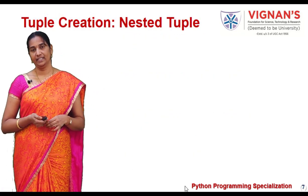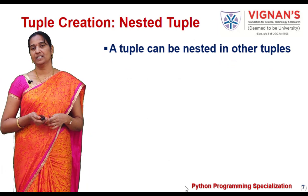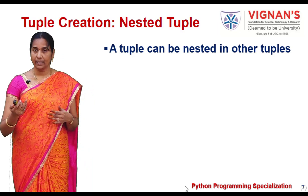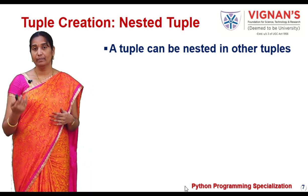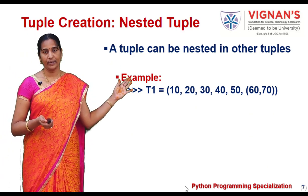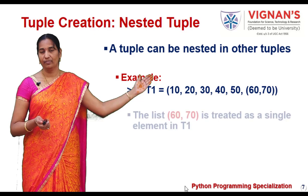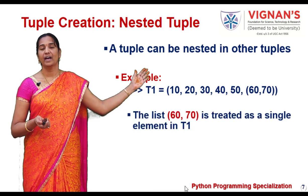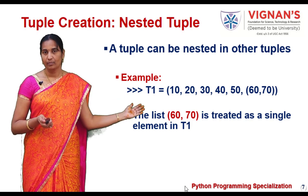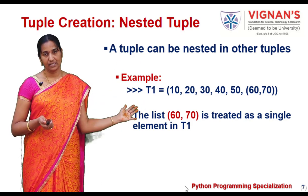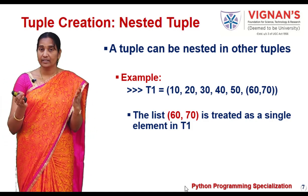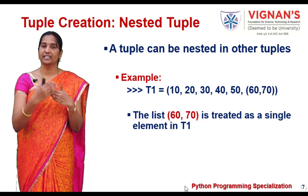Now let us see how to create a nested tuple. Similar to the nested list, it is possible to create a nested tuple — a tuple where one tuple can be included as an element in another tuple. Here you can observe t1 is a nested tuple where it includes an element that is itself a tuple. If you observe, 60 and 70 form the internal tuple, and moreover it is an element of the tuple t1. Such tuples are known as nested tuples.